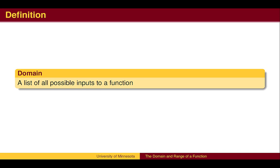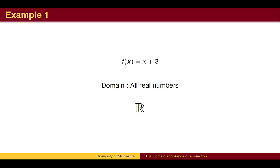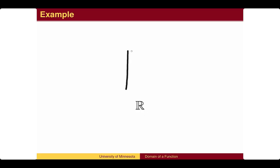The list of all possible inputs to a function is called the domain of the function. For the function f(x) = x + 3, the domain is all real numbers. In textbooks, a boldface ℝ is used to denote all real numbers. To draw one by hand, draw a double vertical line at the left to begin.